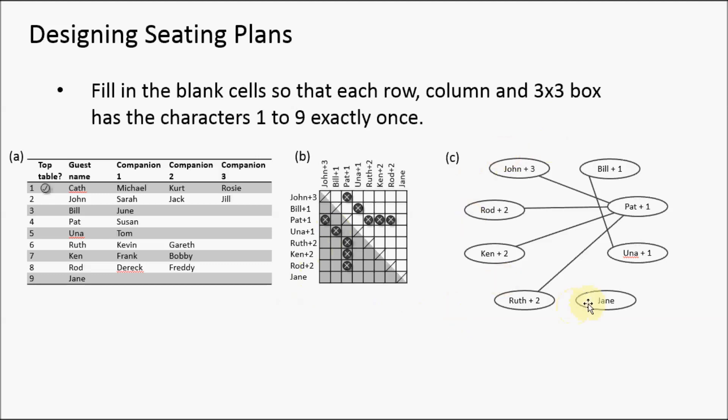This can be modeled as a graph. We have a vertex for each guest group, and then we have edges between guest groups that are known not to get on with one another.